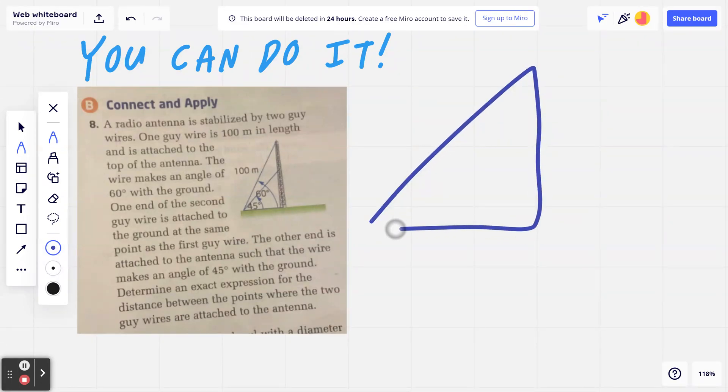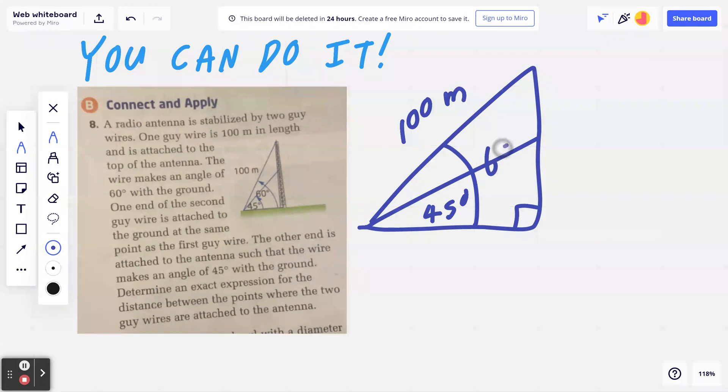Step one, I'm going to draw this diagram again and I'm going to write down 100 meters. I'll draw the second wire like that and this is going to be 45 degrees. And this angle is going to be 60 degrees. So the question is asking for this measurement right here and we can call this x.